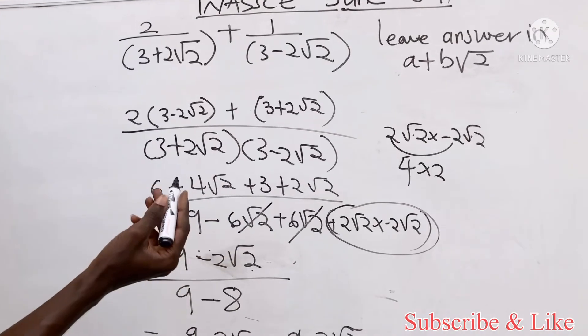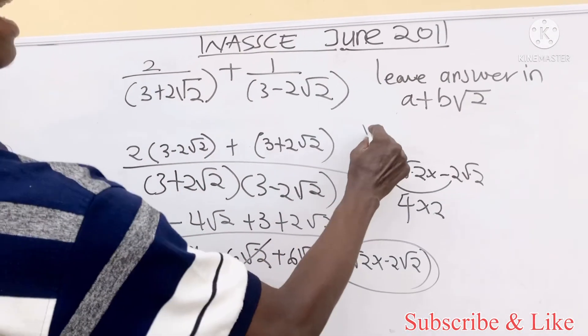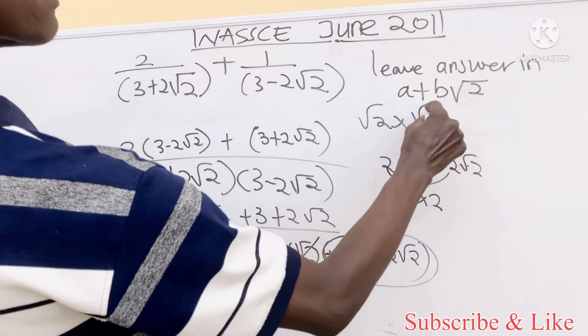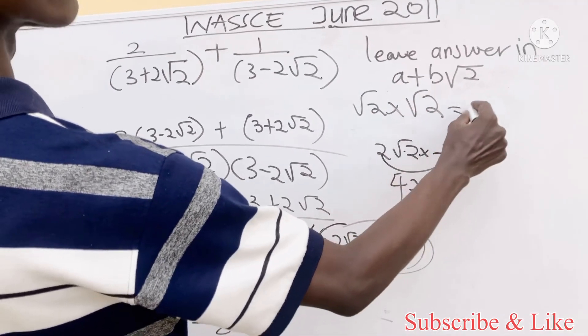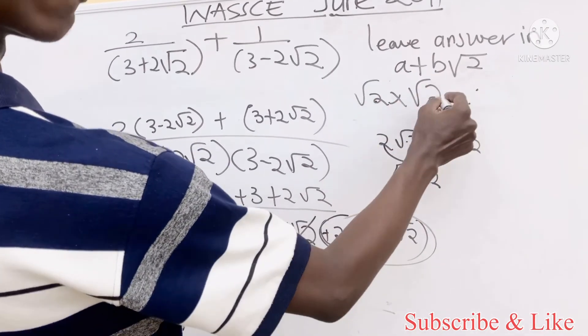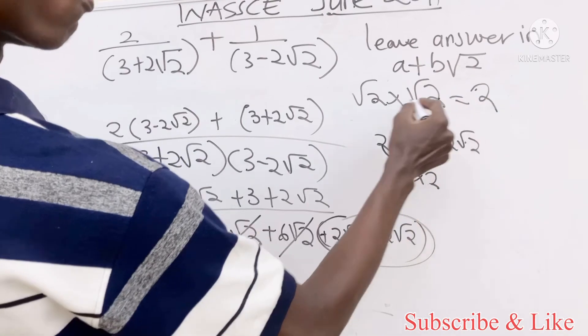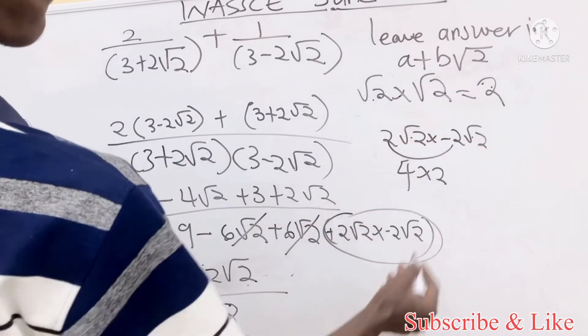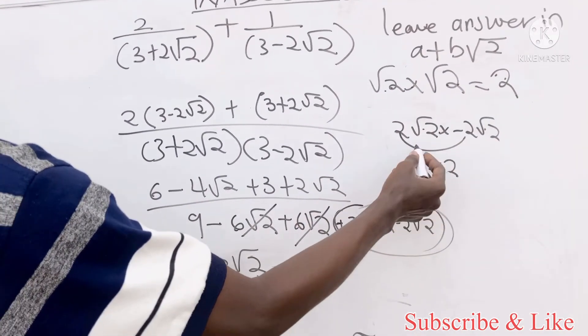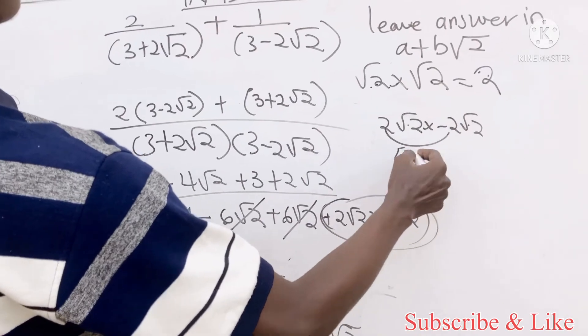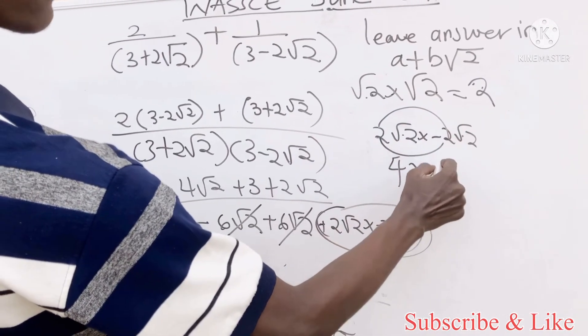You have to take note of the rules: anytime you multiply a root times a root, it becomes the number. So two times two will give us two, and root two times root two gives us two.